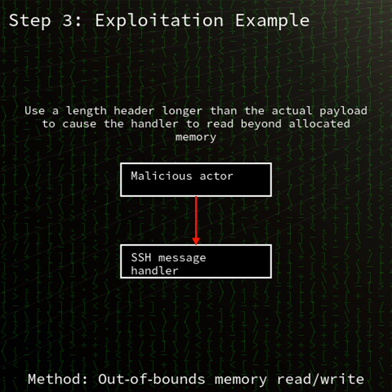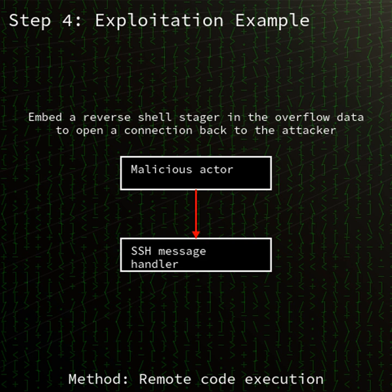This flaw falls under CWE-306, Missing Authentication for Critical Function. In essence, the SSH server did not properly enforce authentication before processing certain protocol messages, allowing unauthenticated attackers to trigger code execution.